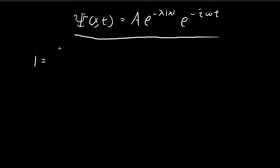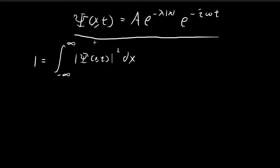So how do we normalize this wave function? When we say we want to normalize the wave function, it means we want to restrict this integral to be equal to 1. We're going to plug this expression into the integral and arrive at an expression that allows us to deduce what the constant A should be, which will normalize the wave function.